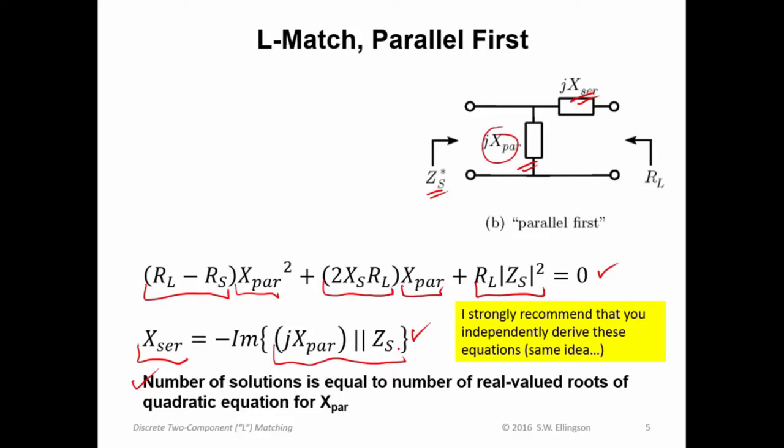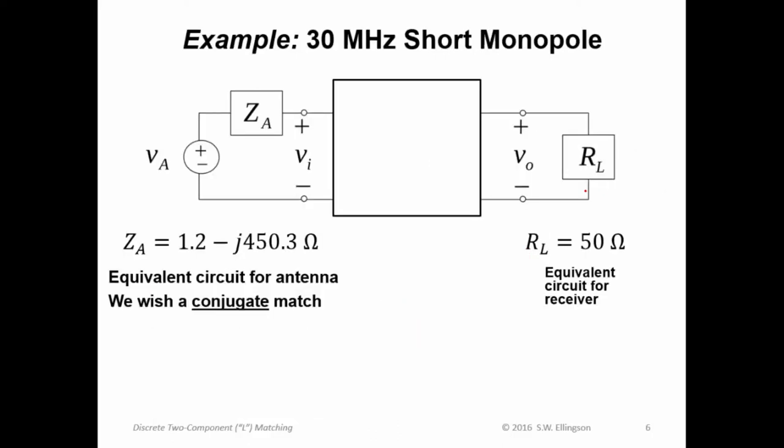Then to get the series reactance, this one here, you change the sign of the imaginary component of the parallel combination of J X sub par in parallel with Z sub S. That's all there is to it. Once again, I strongly recommend that you independently derive these equations. The technique for doing this is the same. What you do is you move systematically from right to left or left to right. You figure out what you have to do to convert one impedance into the other one. It takes about a page of math, but it's very straightforward. So let's apply these equations.